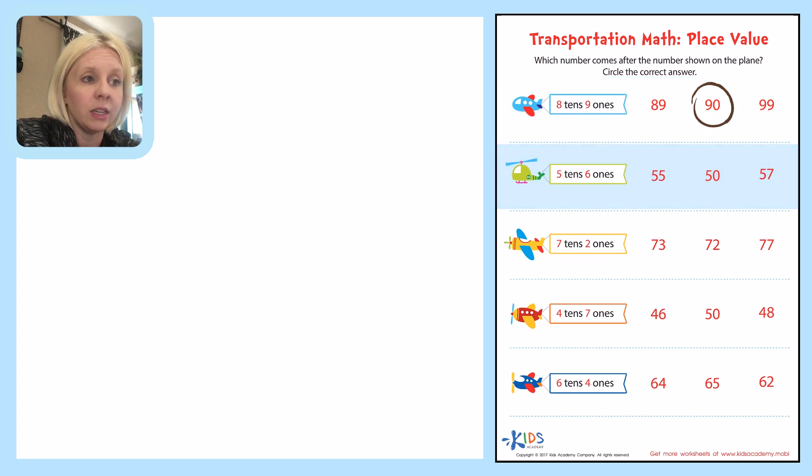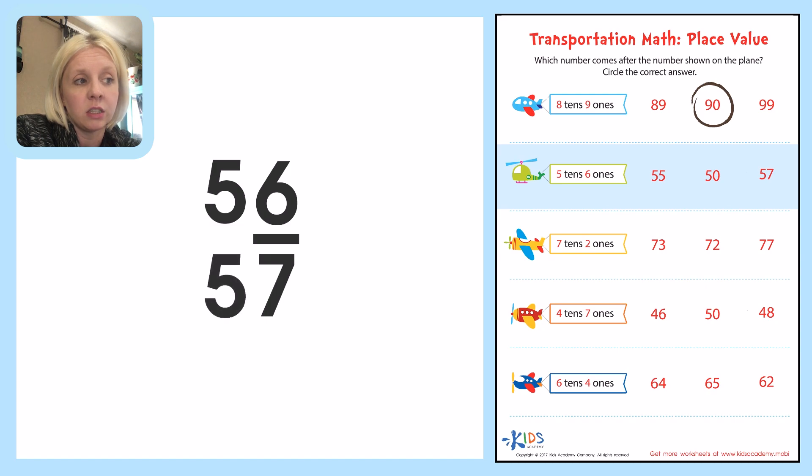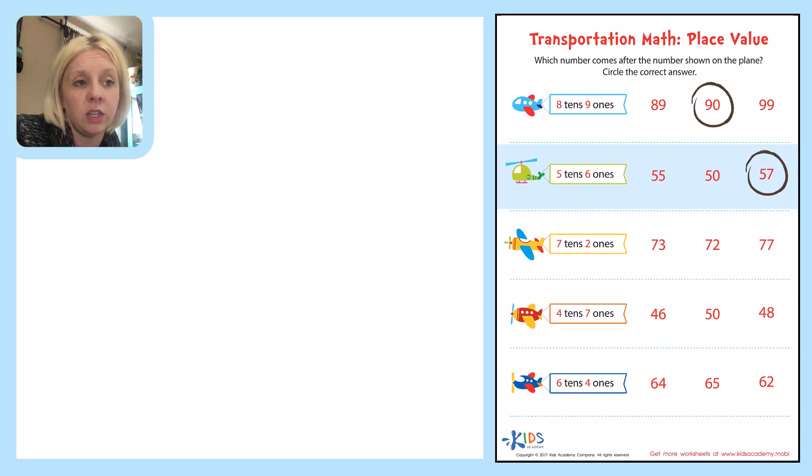The next one is 5 tens and 6 ones. That's the number 56. And I told you, normally we're looking at the ones place. As long as it's not a 9, then it's just going to be the number right after it. So what comes after 6? The answer is 7. The 5 stays the same. So our answer is going to be 57. So come right over here. We're going to circle 57. 56, 57. That was our next number.